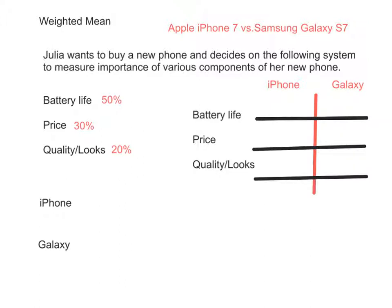Julia wants to buy a new smartphone and she decides on a system to determine which parts of the cell phone are more important. She's trying to decide between an Apple iPhone 7 or a Samsung Galaxy S7.